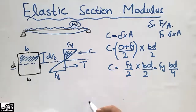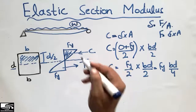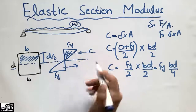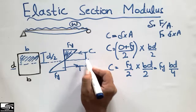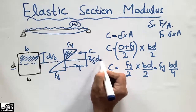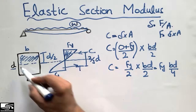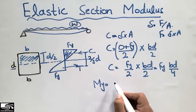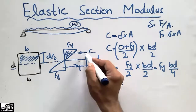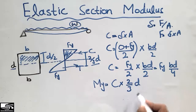Now I will find the yield moment, because yield stresses are reached. The yield moment My will equal the compression force C multiplied by the moment arm. This moment arm is equal to 2/3·D, as we know from this section, since the distance between the compression and tension resultants equals 2/3·D. So My = C × (2/3·D).